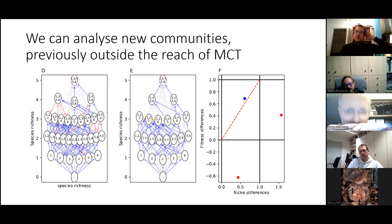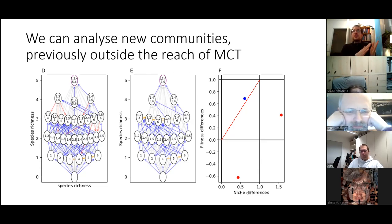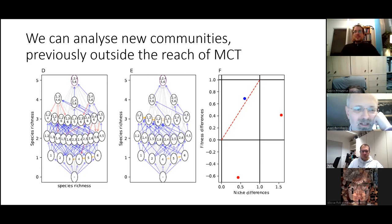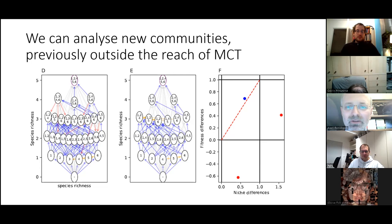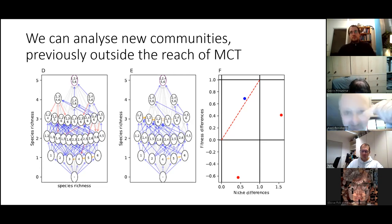Axel raises a final point about unifying approaches: when you have a species pool much larger than local biodiversity, you get constant turnover — species invade, others go extinct. In such an invasion graph this would appear as loops. He suggests trying to think about how different ecological approaches might be unified through this framework.